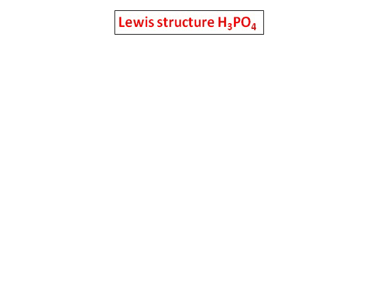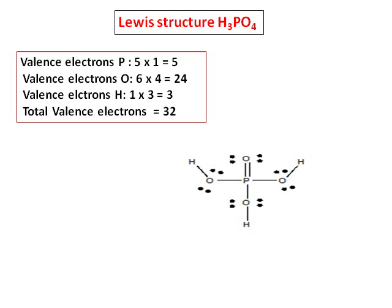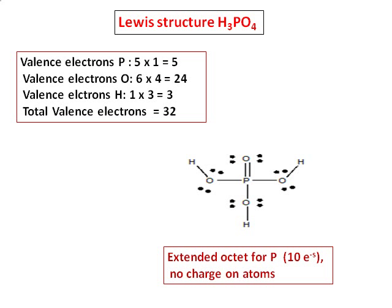The next structure we are going to consider is phosphoric acid. Let's count the valence electrons — we have a total of 32 valence electrons in phosphoric acid. Once I distribute it, I can have a structure for phosphoric acid in which phosphorus is surrounded by 5 bonds or 10 electrons. Such a structure is not possible for nitrogen, because though nitrogen and phosphorus belong to the same group, nitrogen has no d-orbital, therefore it cannot extend its octet.